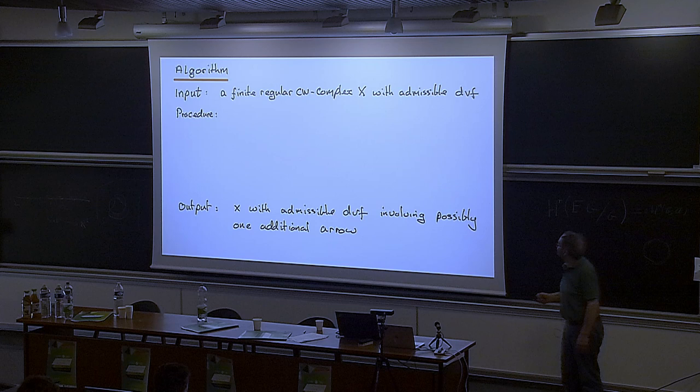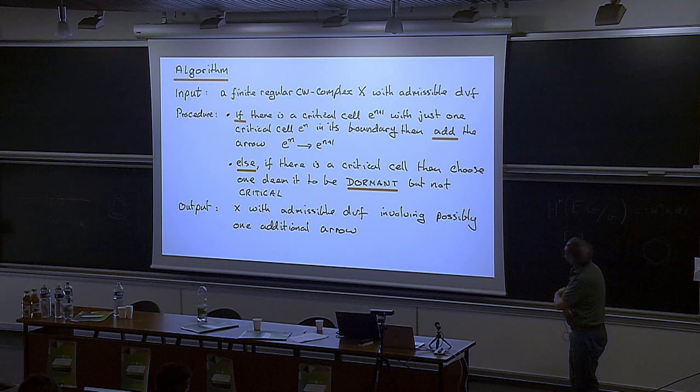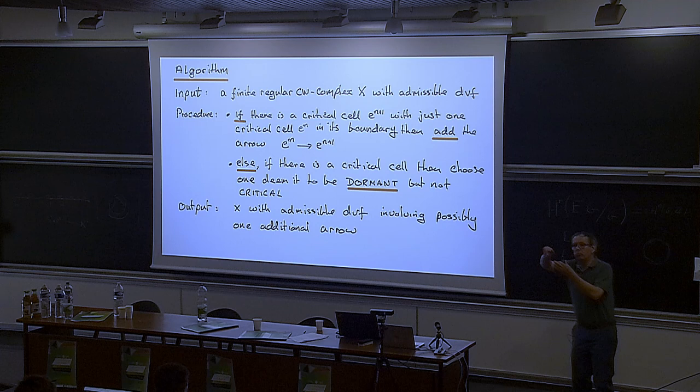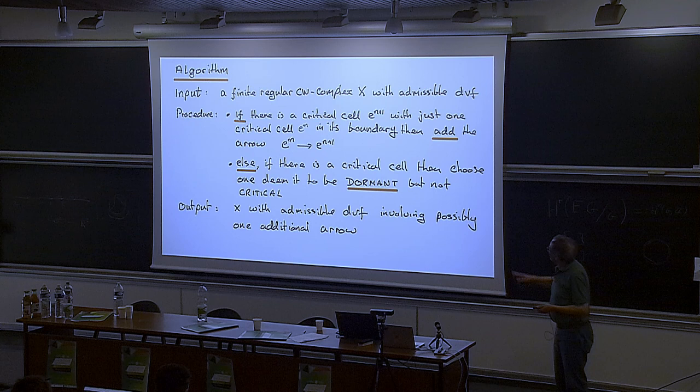What's the procedure? I have a picture on the next slide which explains it. If there's a critical cell E_{n+1} with just one critical cell E_n in its boundary — so you search for critical cells with just one critical cell in the boundary — and if you find one, then add the arrow from E_n to E_{n+1}.